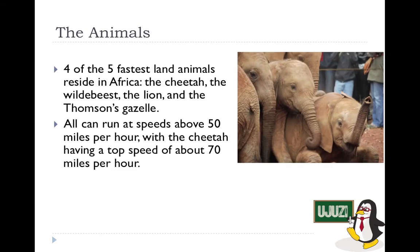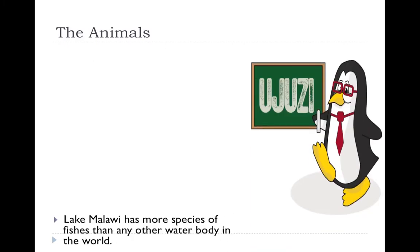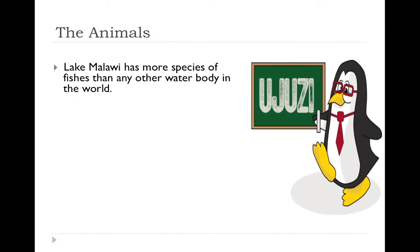The largest land-living animal in the world is the African elephant. It weighs six to seven tons and consumes 160 liters of water every day. Lake Malawi is also one of the biggest lakes in Africa and has more fish species than any other water body in the world.